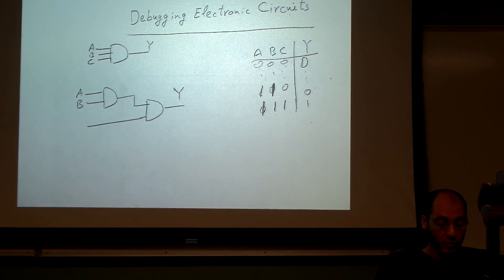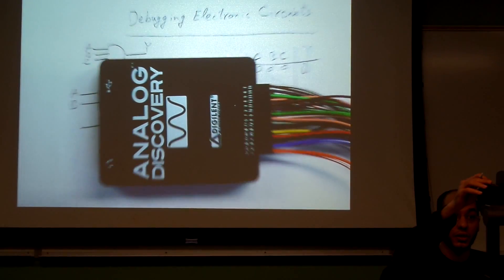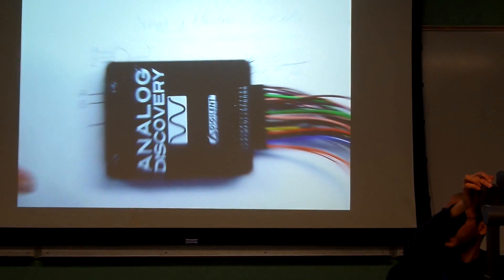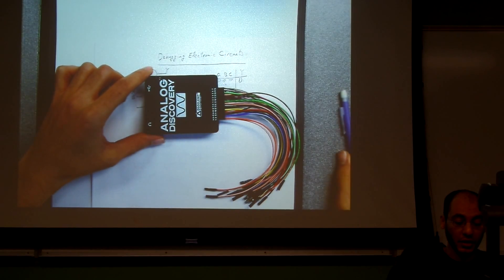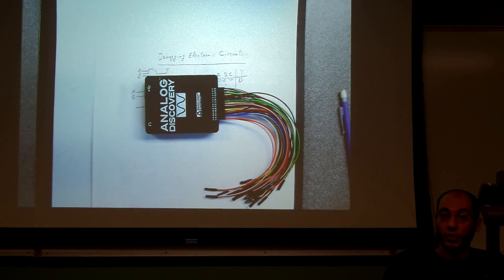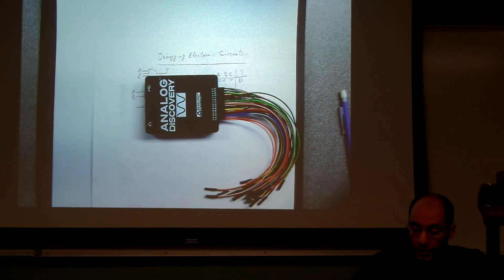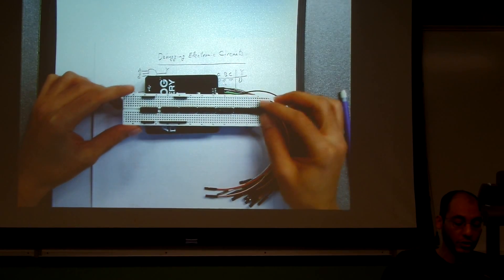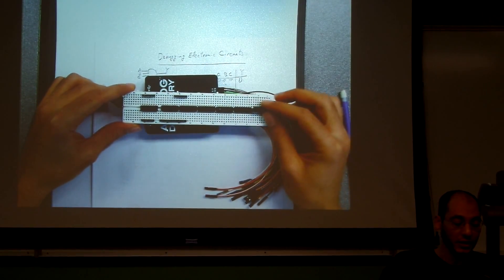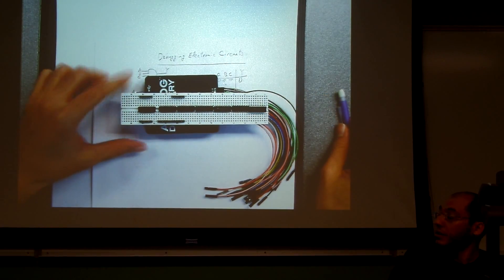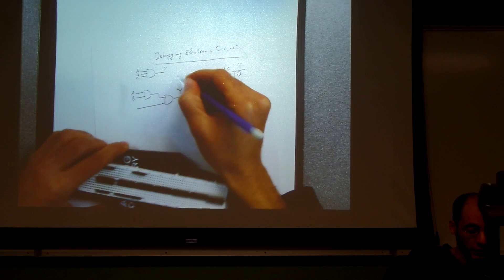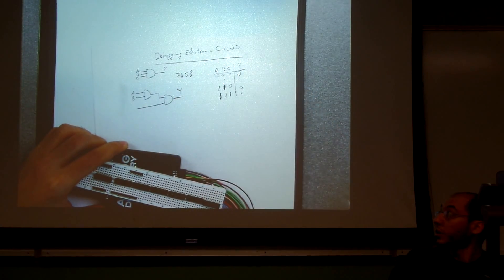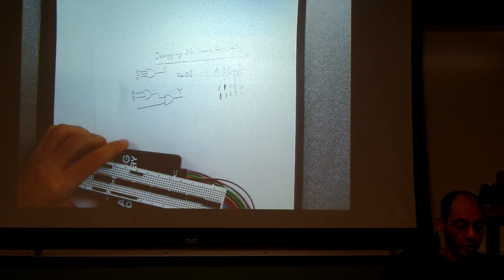I'm going to assume you are using what is called the Analog Discovery Kit, which is a kit used to interface your circuit with the computer. You have a breadboard, and for now we're going to assume that only one chip is connected — the chip called 7408, which is the chip you are supposed to be using for this video.